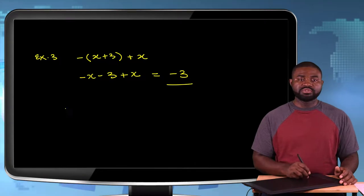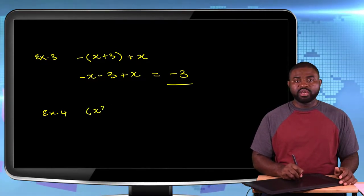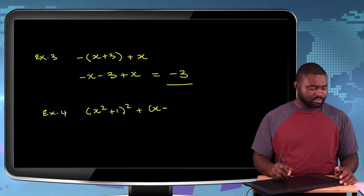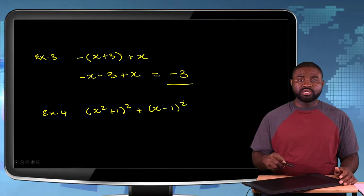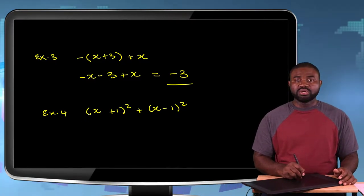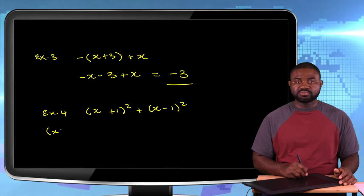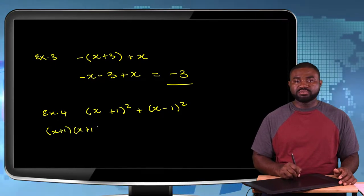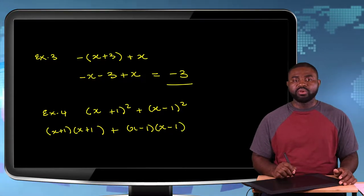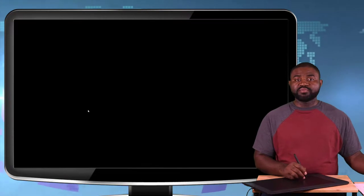That is our response. Another example — Example 4: we have X plus 1 all squared plus X minus 1 all squared. Let's simplify this expression. The first thing we need to do is expand. X plus 1 all raised to the power 2 is the same as X plus 1 multiplied by X plus 1, plus X minus 1 multiplied by X minus 1.